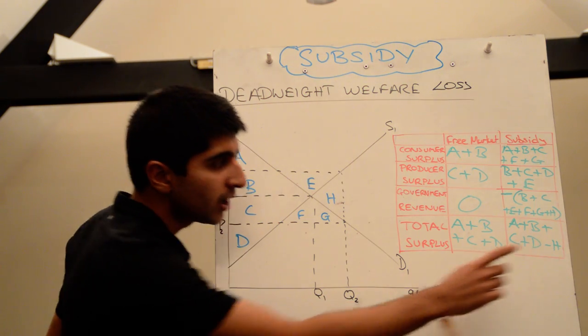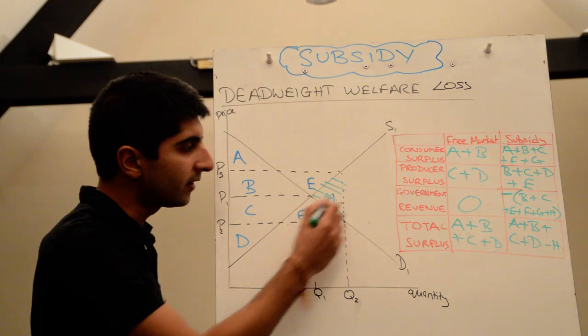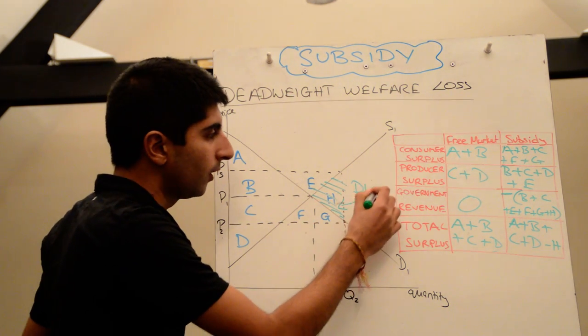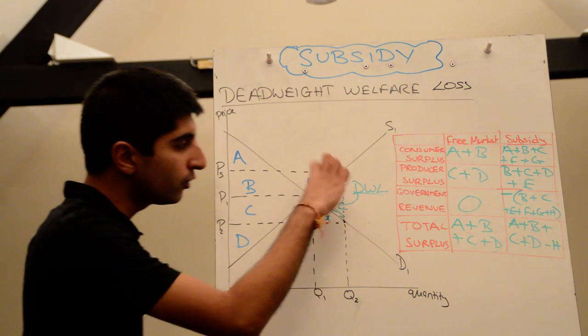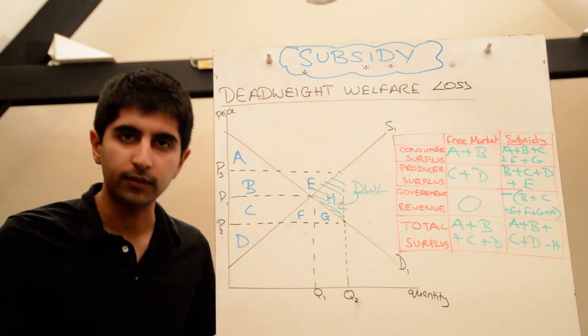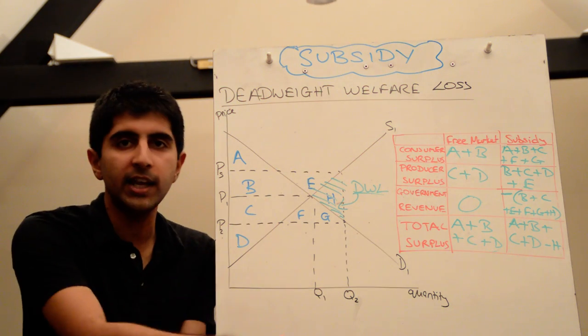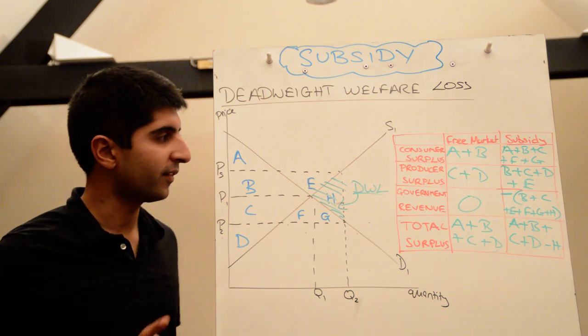And it's H. It comes down to H being the unaccounted area here. And that is this triangle here. That is the deadweight welfare loss. And that's why whenever we draw a subsidy diagram, you can always draw and shade in this triangle and say this is the deadweight loss to society as a result of the government intervening, changing efficient market outcomes.